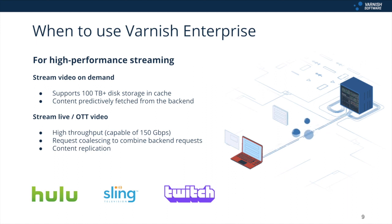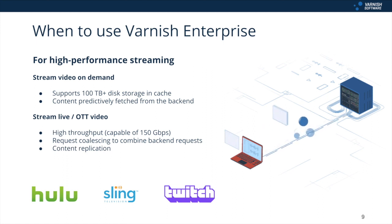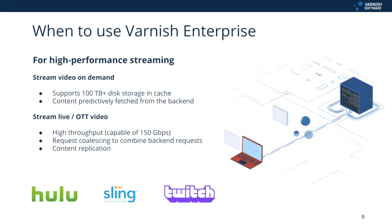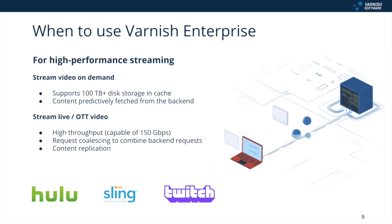And when should you use Varnish Enterprise instead? Varnish Enterprise was brought into life in part by the proliferation of content delivery use cases and the need for greater performance, so any high-traffic, content-heavy web service will benefit from this additional performance and stability. But there are many other use cases that Varnish Enterprise unlocks, such as high-performance streaming. It is used by the biggest names in the industry to offer high-performance, low-latency streaming that protects origin servers from the effects of huge demand. For streaming video on demand it supports 100TB-plus disk storage and cache, so content can be stored close to users and predictively fetched from the backend and replicated across the network. For streaming live and OTT it enables high-throughput request coalescing that combines backend requests to avoid overloading the backend, as well as content replication across servers and many more features.